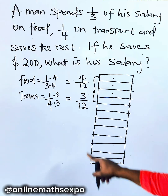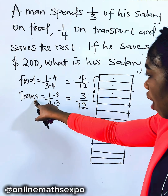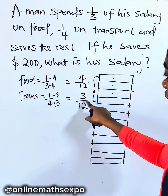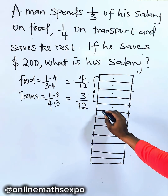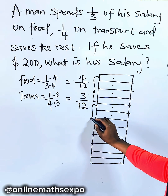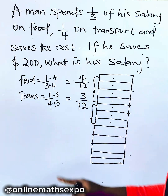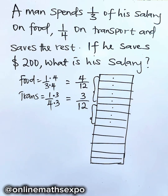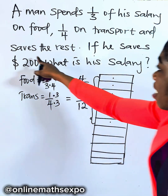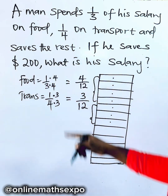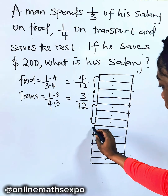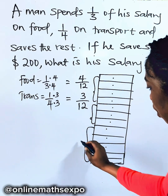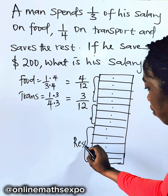I hope you are with me. For transport, he spent 3 out of 12, so parts 1, 2, 3 represent transportation. The question says he saves the rest, which is parts 1, 2, 3, 4, 5 — that gives you the rest, which he saved.